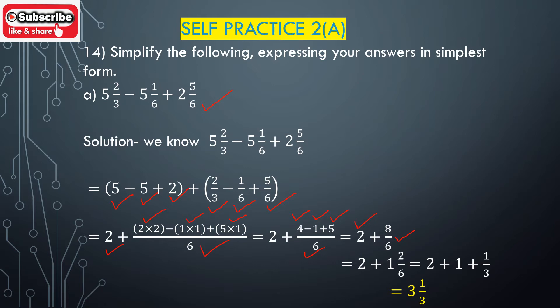We have to convert 8/6, which is an improper fraction, into a mixed fraction. Dividing 8 by 6: we know 8 equals 1 multiplied by 6 plus 2, where 1 is the quotient and 2 is the remainder. The mixed fraction is quotient remainder divided by divisor, so 8/6 equals 1²/6.